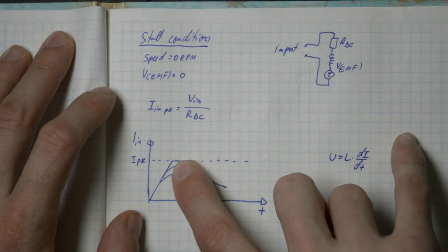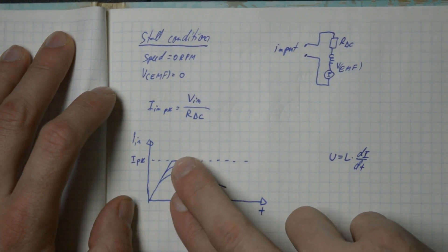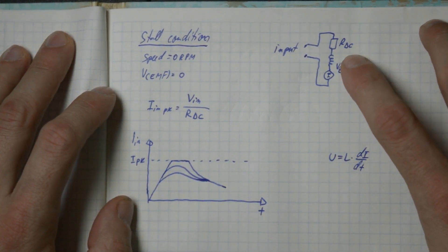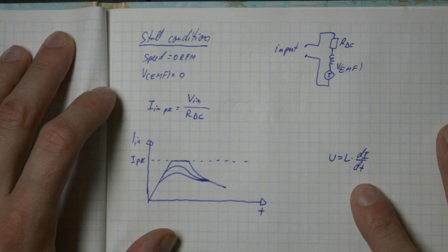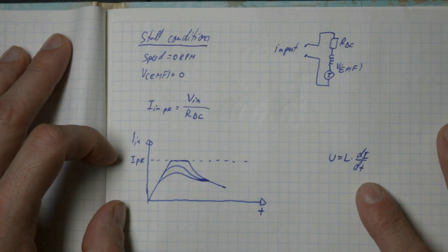Now, does the current jump directly to this peak current? Well, actually, no. So, the slope of the current rise is dictated by the inductance of the motor coil. As you know, the inductor opposes the change of current when a voltage is applied. So you cannot get a peak current directly over an inductor. A certain amount of time needs to pass before that.